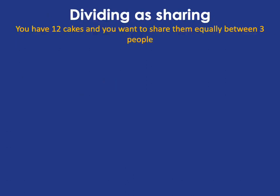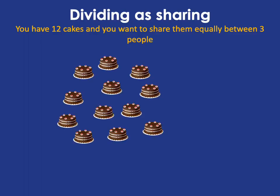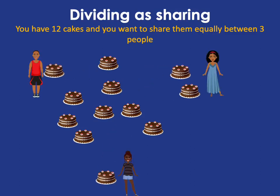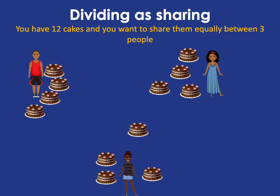We can also think about dividing as sharing. So if you're thinking about 12 divided by 3, you can think of it as having 12 cakes, 3 people who want to share those cakes, and how many cakes will each of the people get? Well, they'll each get 4. So 12 divided by 3 is 4.